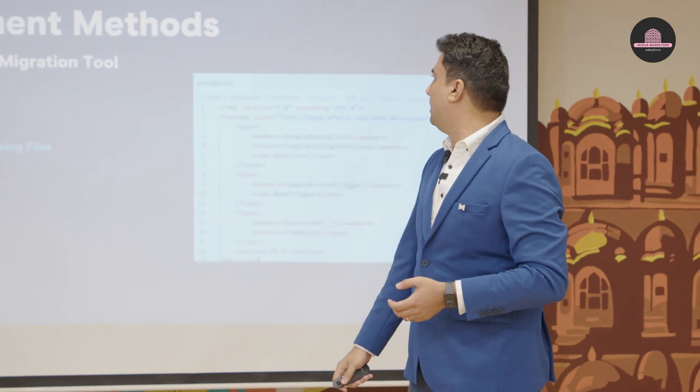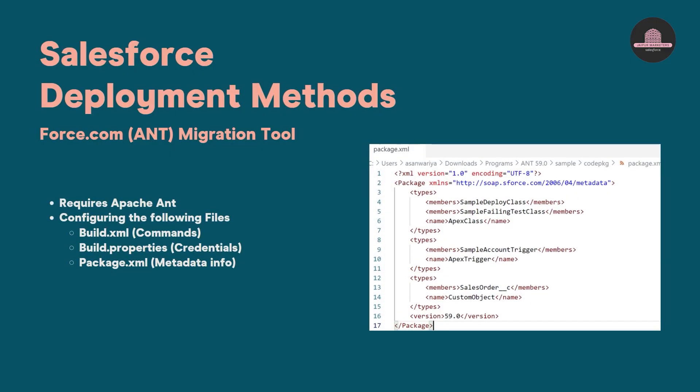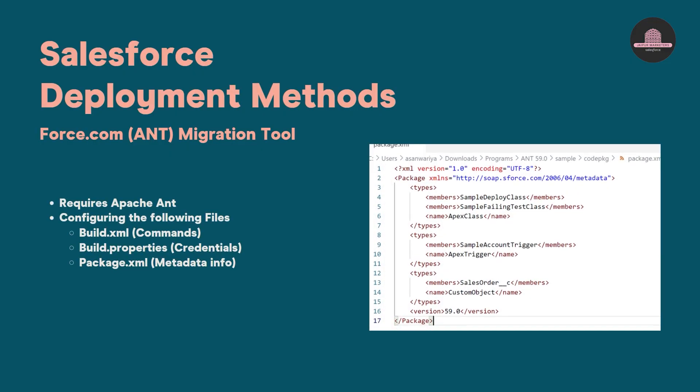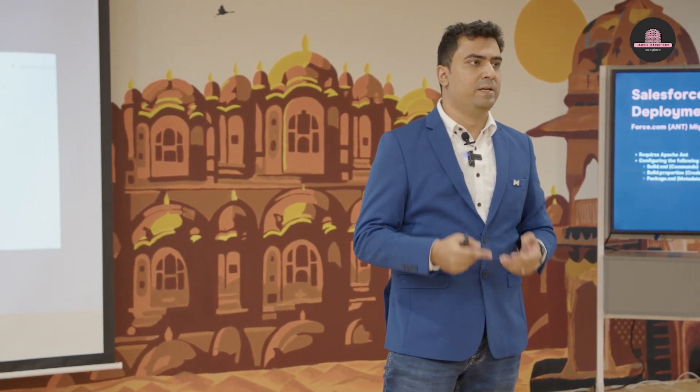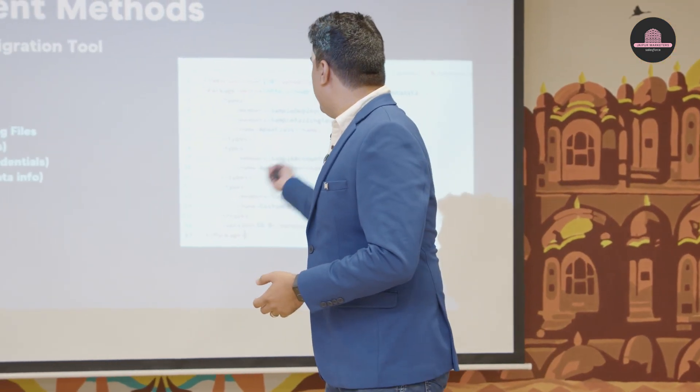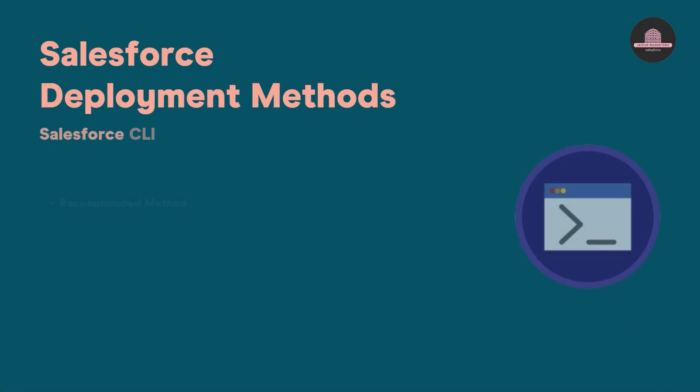The good thing about the Force.com Migration Tool was that it could deploy all the components that change sets couldn't, and it could be automated — it was the basis for earlier CI/CD implementations. With this tool you create three different files: build.xml containing your different commands, build.properties containing your environment credentials, and package.xml describing all the components you want to deploy to the target environment.